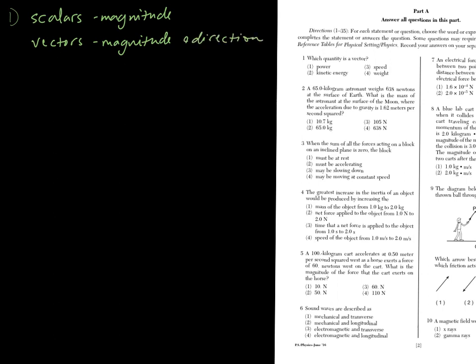So let's look at our choices: power, speed, kinetic energy, and weight. For speed, it's a scalar. If we think of S and V, speed, velocity, scalars, speed. Kinetic energy and power are all related to energy, and energy is a scalar, it has no direction. So that leaves us with weight. Because weight is a type of force, and we represent forces with arrows.